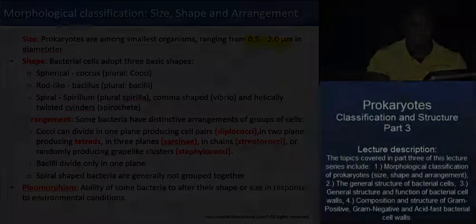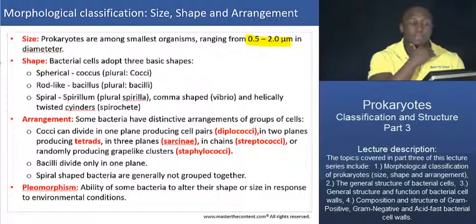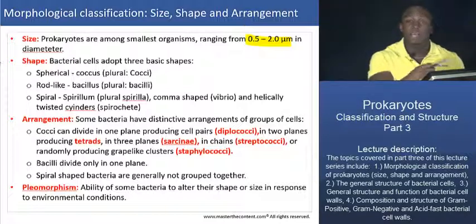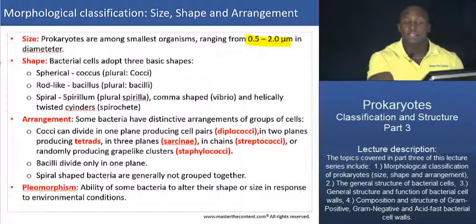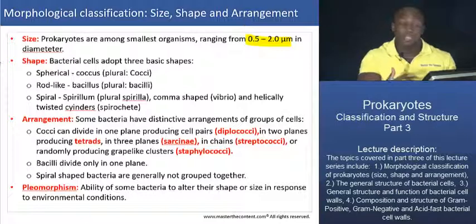Okay, so we're moving on. We're done with taxonomy, and now what we're going to do is look at the morphological characteristics of bacterial cells — specifically their size, their shape, and their arrangement, or the clusters or groupings that they form.